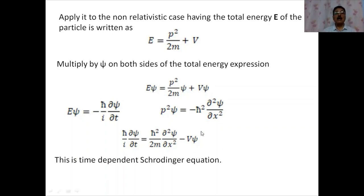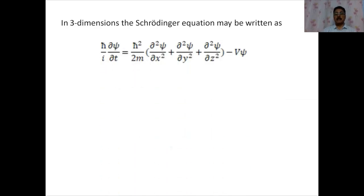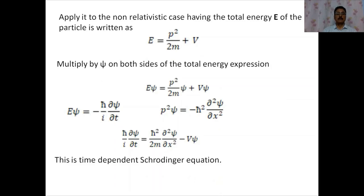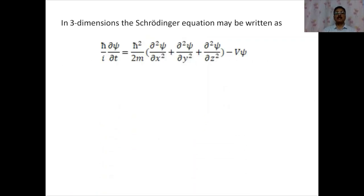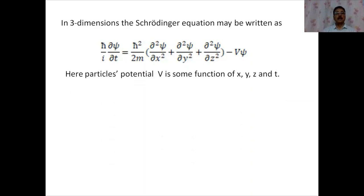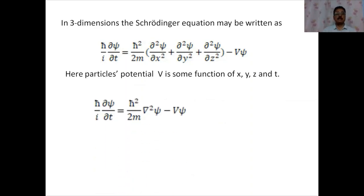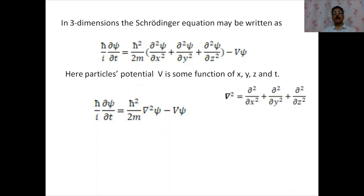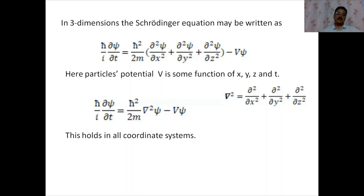In three dimensions, the Schrödinger equation includes ∂²ψ/∂x² + ∂²ψ/∂y² + ∂²ψ/∂z², and V is a function of x, y, z, and t. Using the Laplacian operator ∇², this can be written as (ℏ/i)(∂ψ/∂t) = −(ℏ²/2m)∇²ψ + Vψ, valid in Cartesian, spherical polar, or cylindrical coordinates.